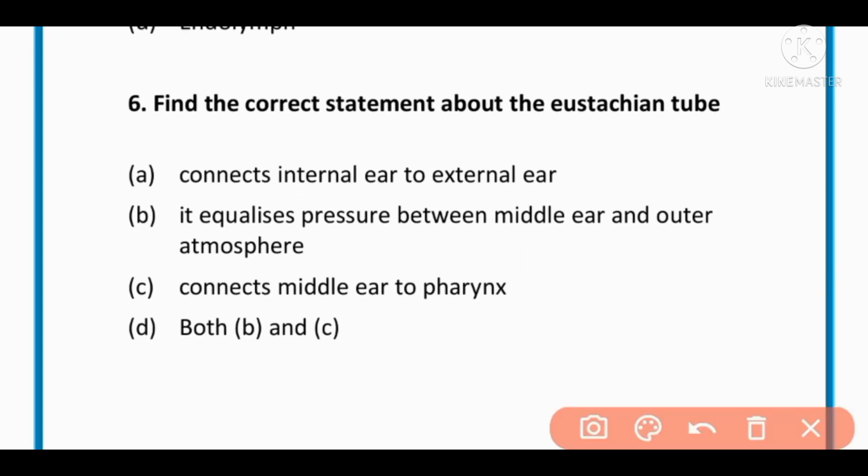MCQ number 6: Find the correct statement about eustachian tube. Eustachian tube connects internal ear to external ear, equalizes pressure between middle ear and outer atmosphere, connects middle ear to pharynx, or both B and C. The correct option is D: B and C are correct.